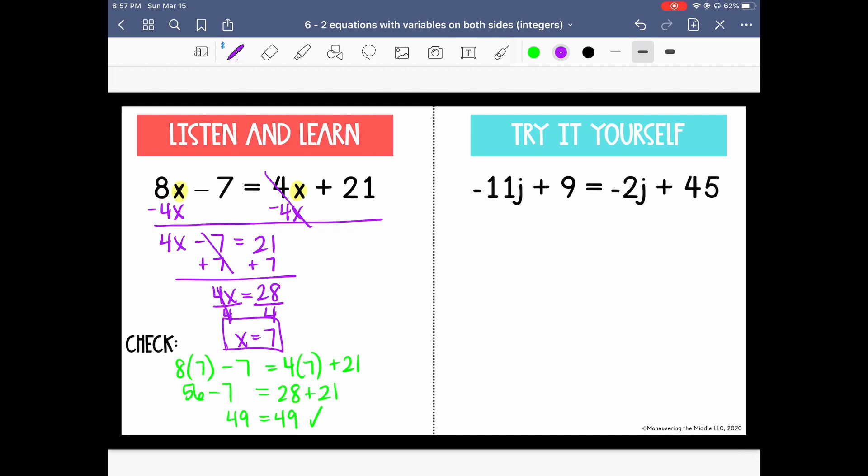Here when I'm deciding which side to collect my variables, I'm going to collect them on the right this time, since negative 2j is larger than negative 11j. So to cancel out a negative term, we need to add, add 11j to both sides. This leaves me with 9 equals 9j plus 45.